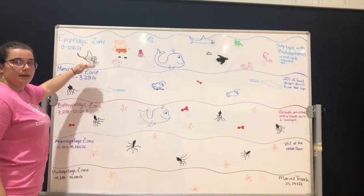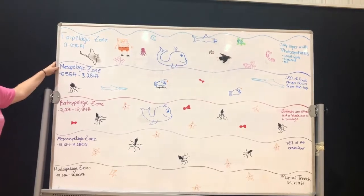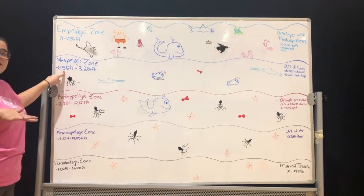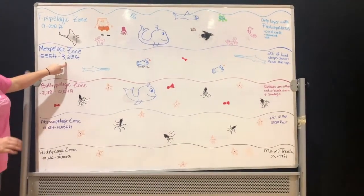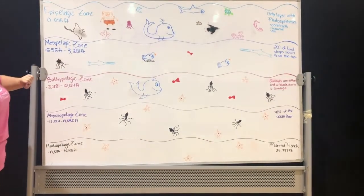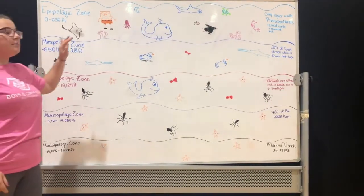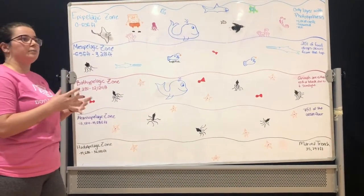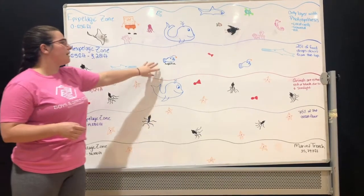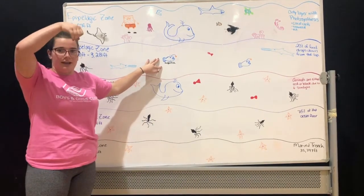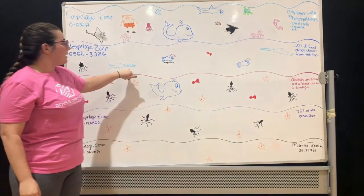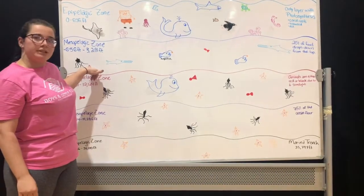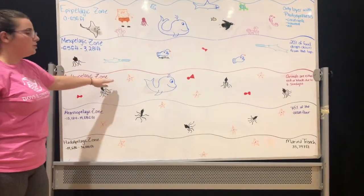And then whenever we go down, we're gonna go to the mesopelagic zone and this is from 656 feet from the ocean and it goes down to 3,281 feet below sea level. Here only 20% of the food drops down and very little sunlight gets here, so the only fish we're gonna see here are predatorial ones. We're gonna have the anglerfish, which is in Nemo — the one with the light hanging off his head who was trying to eat Dory — and then we have swordfish and squids and other invertebrates like that.